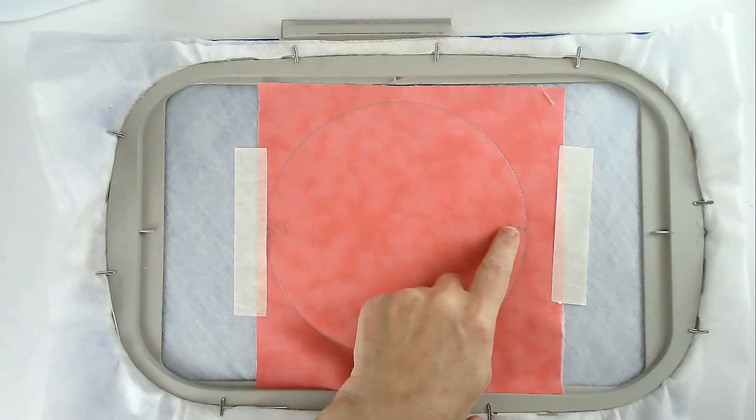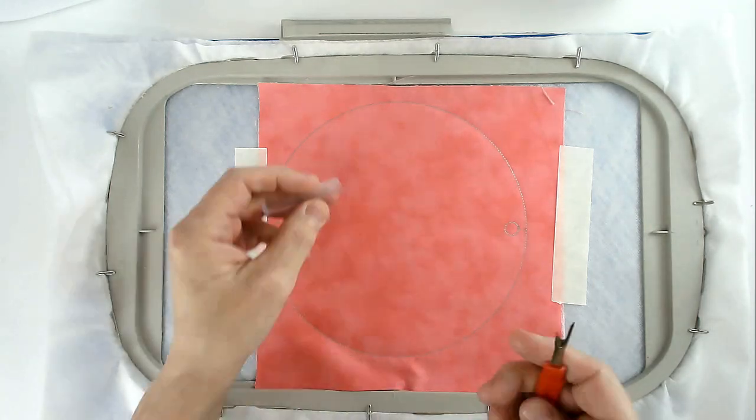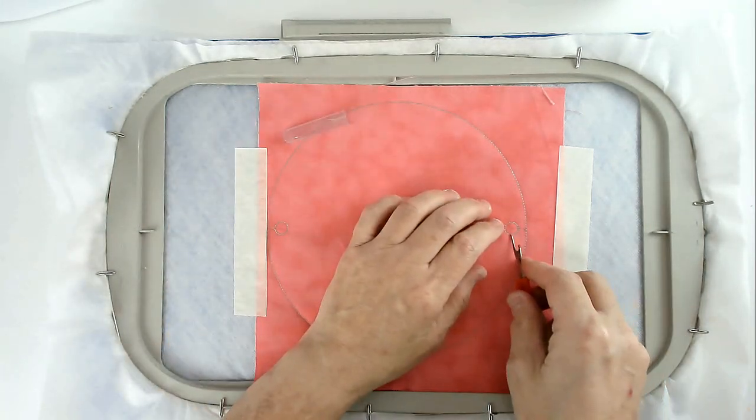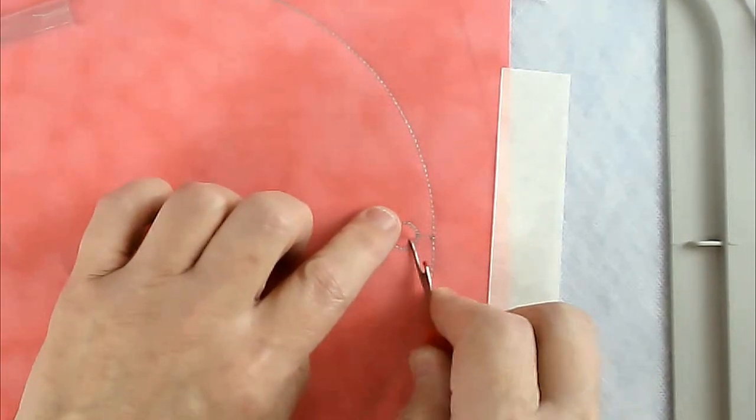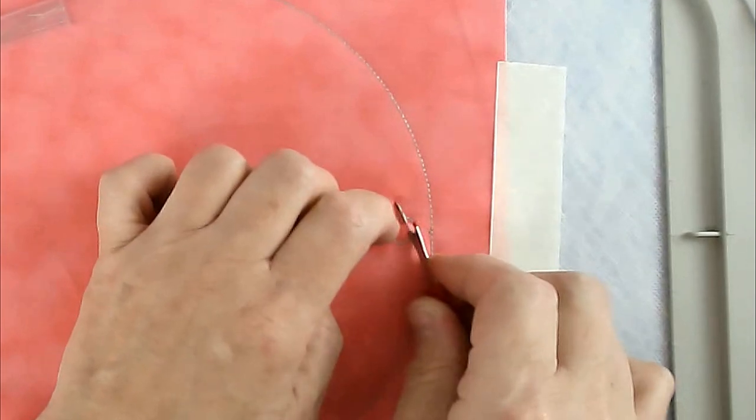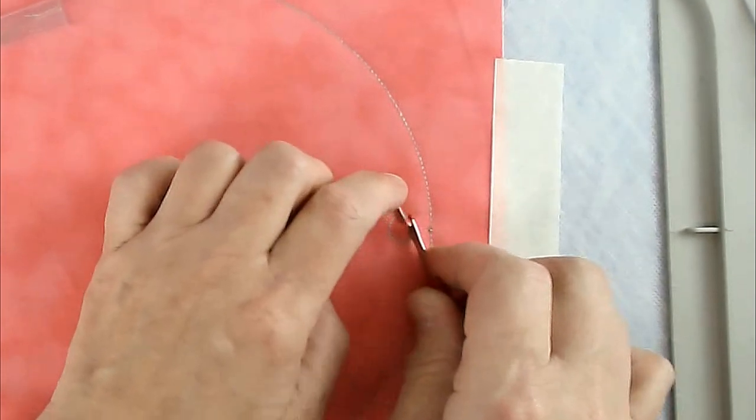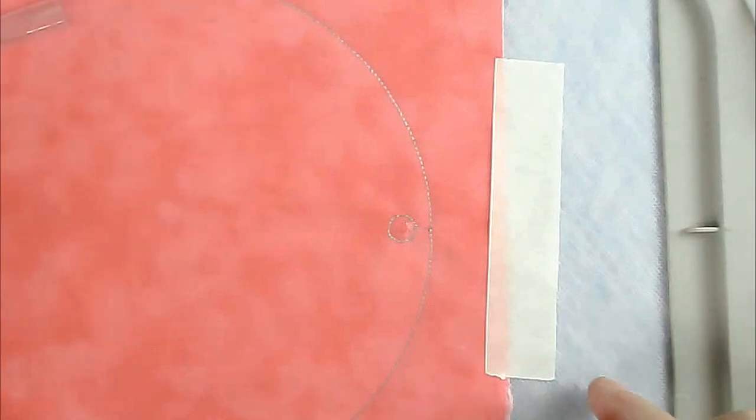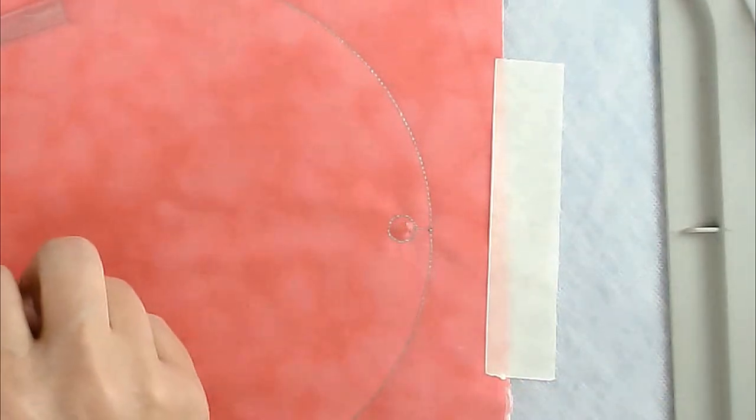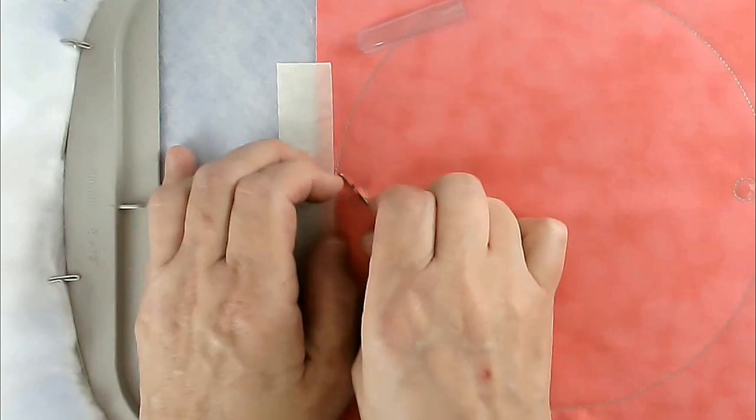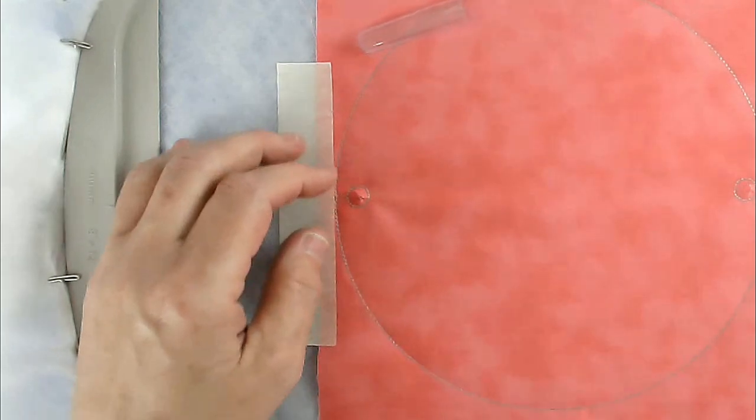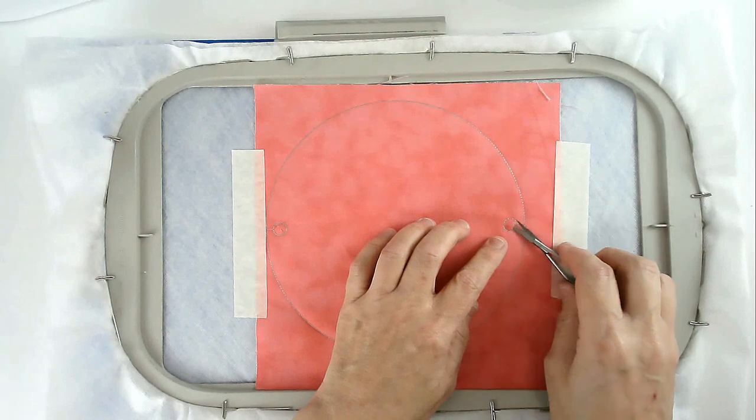We're now going to trim out from the center of the eyelets, so take a stitch unpicker, and you're going to just nick the fabric to create a little hole for your scissors, taking care not to cut your stabilizer underneath. You do need your stabilizer underneath. And then just trim it out.